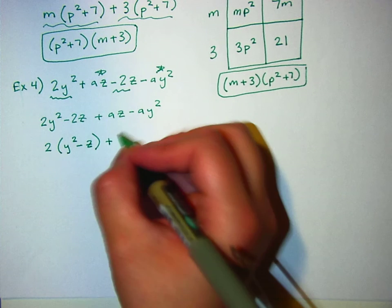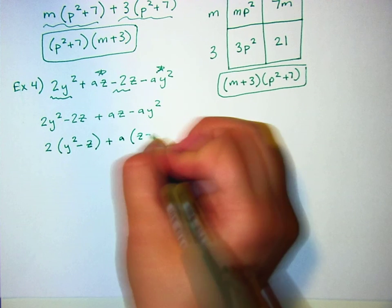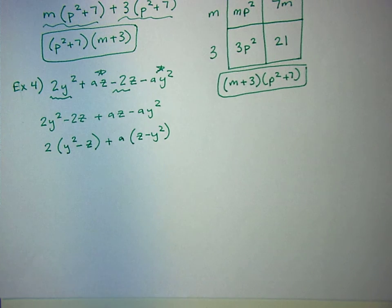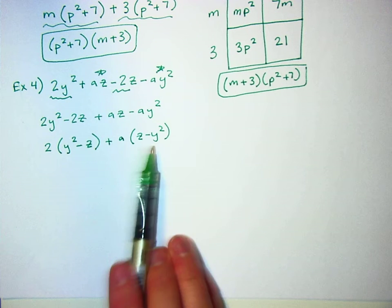Okay, and then out of the second one, I can take out an a, and I'm left with z minus y squared. Now, that's a problem because see how they're not exactly the same? But I can actually make them the same, and the way to make them the same is, the problem is that I want to get it to be a positive y squared here and a negative z to match that one.